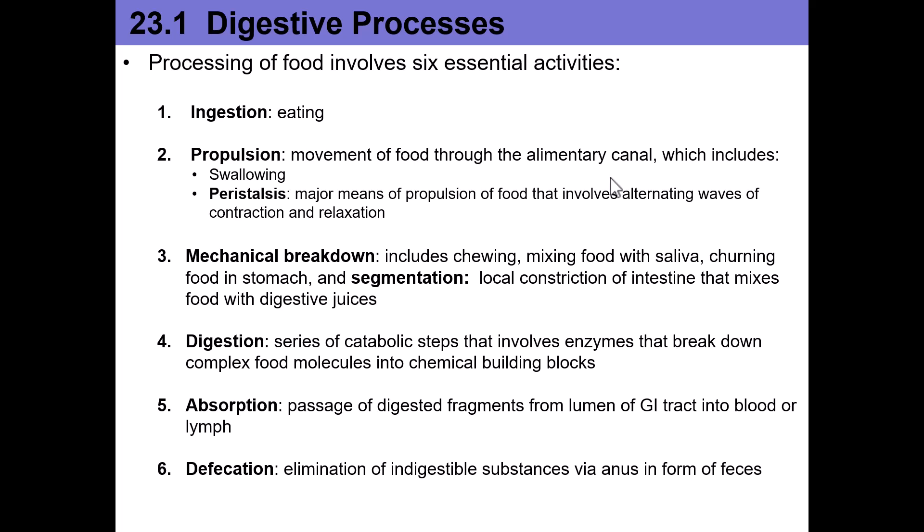We also need mechanical breakdown — taking large pieces of food and breaking them down into smaller pieces. Chewing is part of this, as is any type of churning in any organ, like the stomach, for example. And then segmentation is another type of movement — a back-and-forth movement. You see that a lot in the small intestine. The food is propelled through the small intestine, but while doing that it takes these little back-and-forth movements to help mix the food with digestive juices.